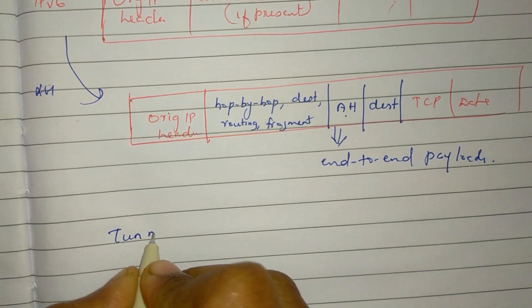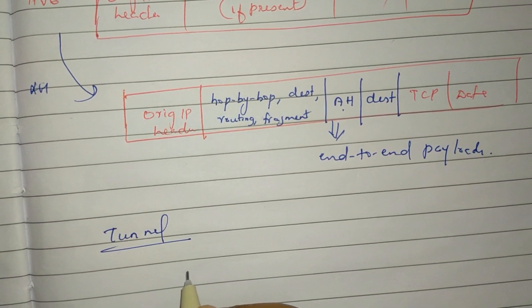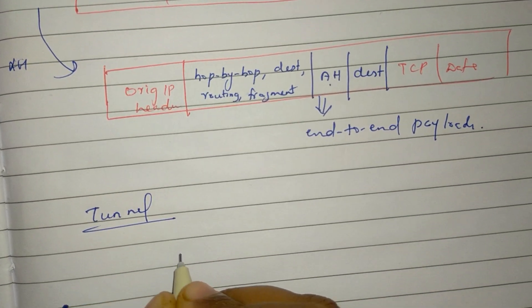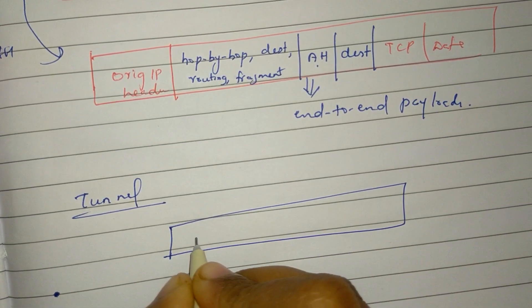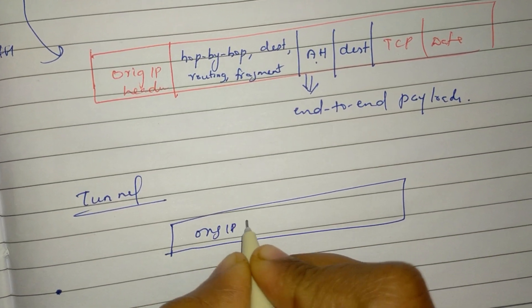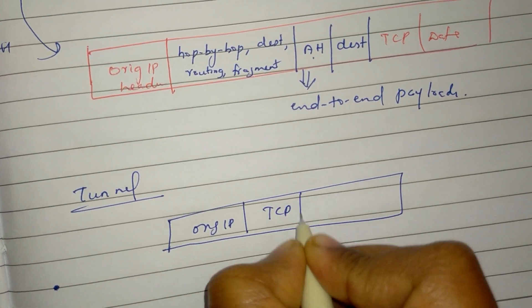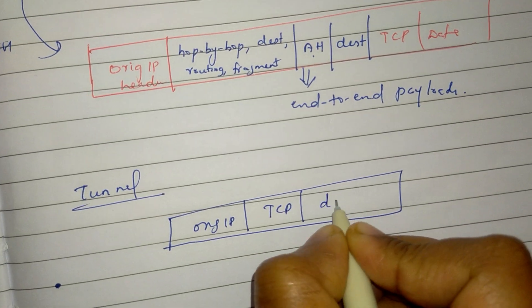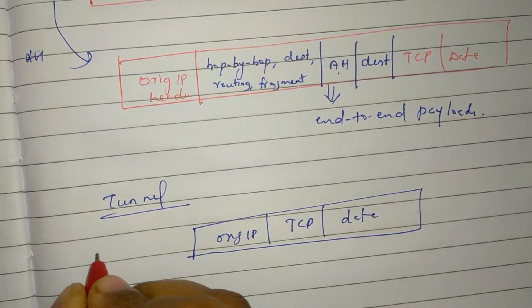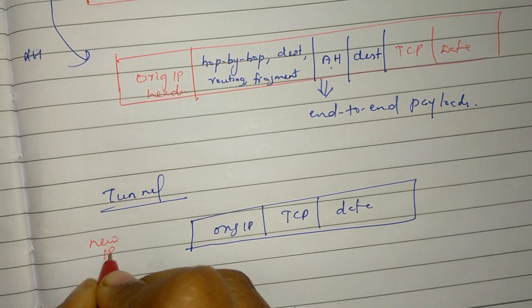Now we have the tunnel mode. For IPv4, what is the original IP header? TCP and data. We have to use a new IP header.